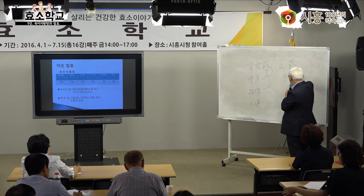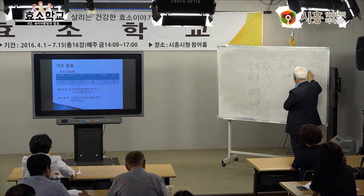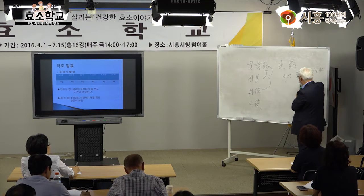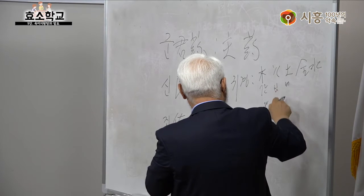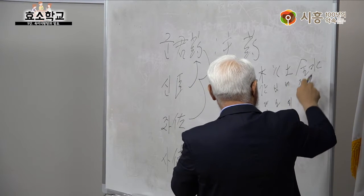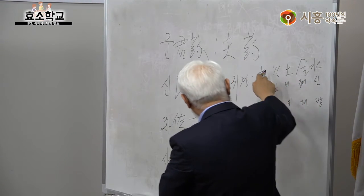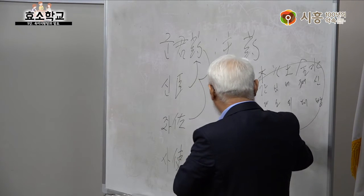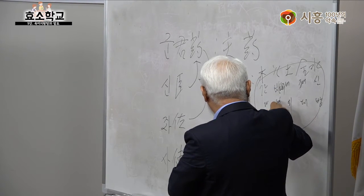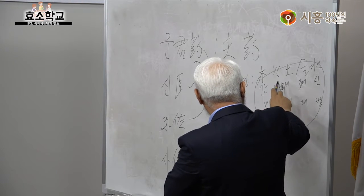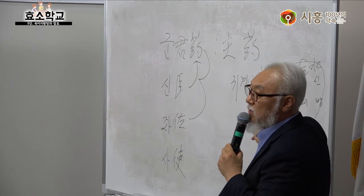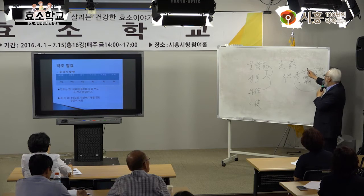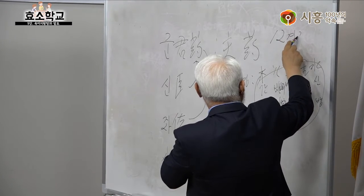사약은 좌약, 신약, 군약의 독성을 완화시키거나 귀경을 조절해주는 역할을 합니다. 목화토금수 오행에 따라 간담, 심소, 비위, 폐대장, 신장방광으로 나뉩니다. 이걸 경락이라고 하는데, 12경락이라고 합니다.